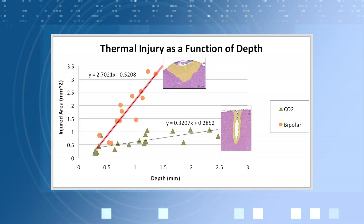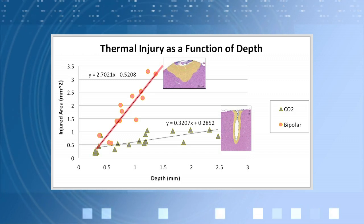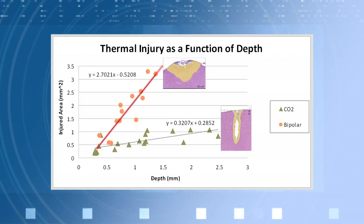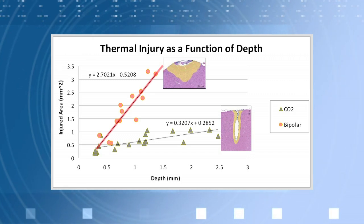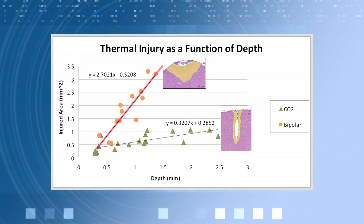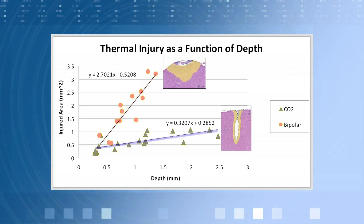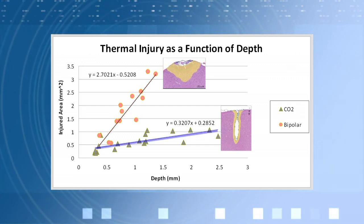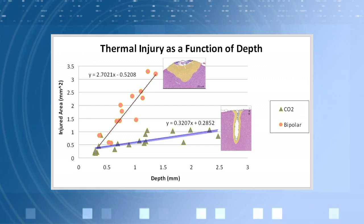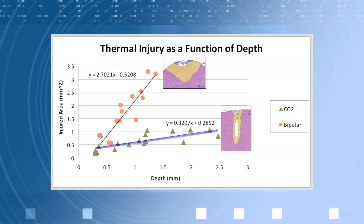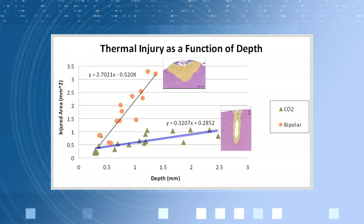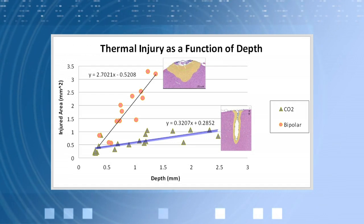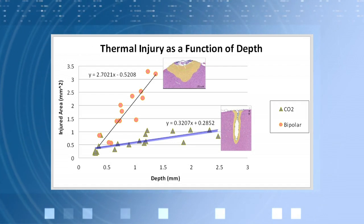The line representing the bipolar electrocautery is nearly vertical — the more energy used, the deeper and greater the thermal damage zone. The line representing the CO2 laser is nearly horizontal. Therefore, when energy is increased, depth of penetration is increased, but the damaged area stays relatively flat.